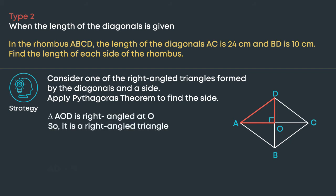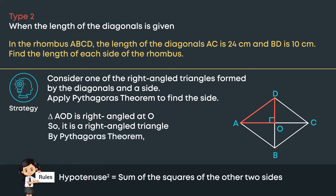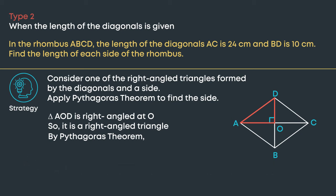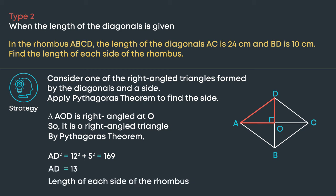Let us consider the triangle AOD, which is right-angled at O. In a rhombus, the diagonals bisect each other at 90 degrees. We can find the length of AD, which is also the hypotenuse of the triangle, by Pythagoras theorem. We have AD² = 12² + 5², which is equal to 169. AD will be the square root of 169, which is 13 centimeters. So each side of the rhombus is 13 centimeters.